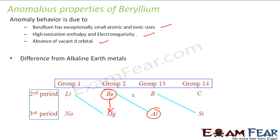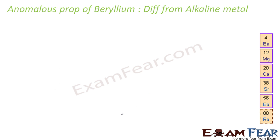In this we will learn two things. The first is how beryllium is different from magnesium and other alkaline earth metals. The second is how beryllium is similar to aluminium. Let us start with the differences from alkaline earth metals.